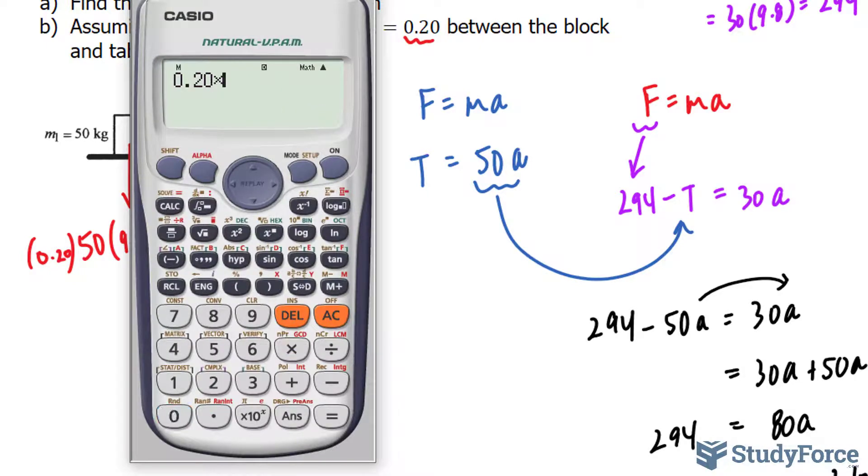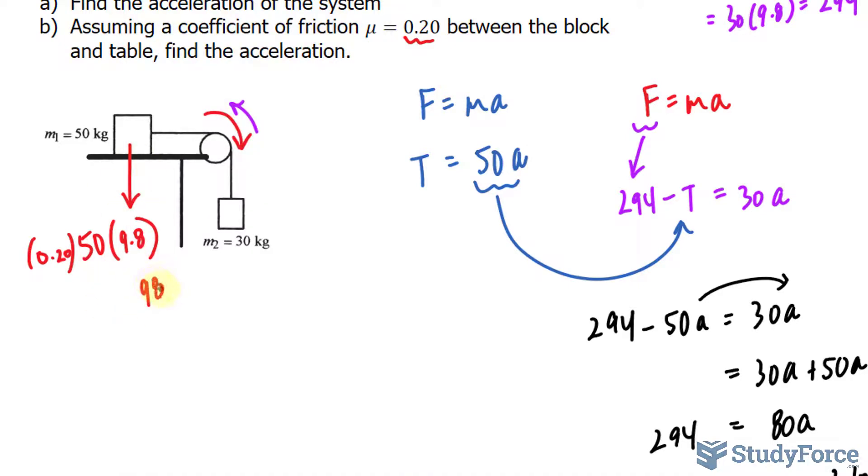We have 0.20 times 50 times 9.8 gives us a value of 98. So we have this force and tension along this chord. How do we modify this formula? Because we're assuming that it is going clockwise, remember our original assumption, we will keep this formula the same.